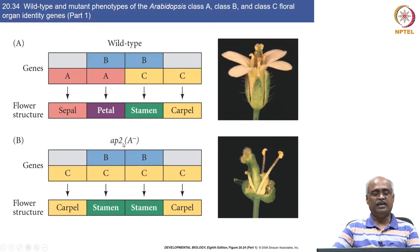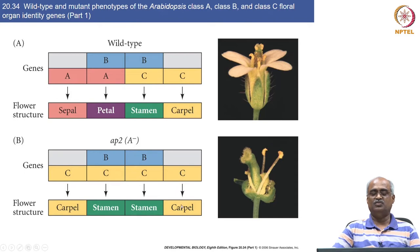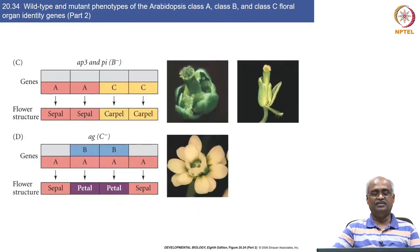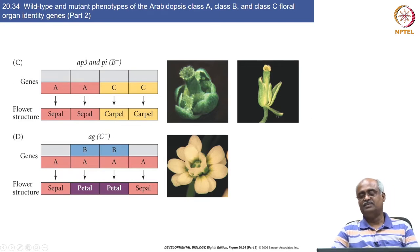If you have a mutation like apetala2 where A is not expressed, C extends into all layers. C alone means carpel, so carpel forms in the outermost whorl where you should get sepals. In B mutants, when you do not have B group gene function, you get sepal, sepal, carpel, carpel — because without B you cannot make petals (A+B) or stamens (B+C), and as seen in these images you get sepal and carpel.